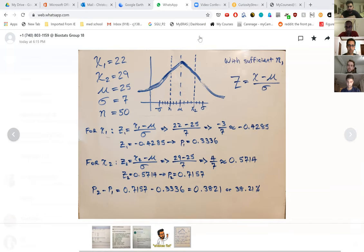That's about a 38% chance that the probability of the mean number of years between asbestos exposure and death will be between 22 and 29 years in the sample of 50 from that community.